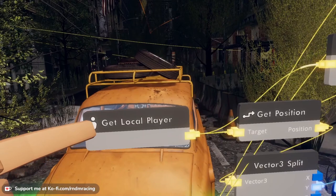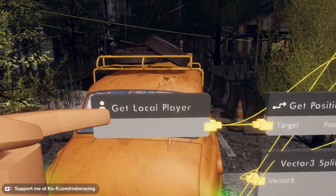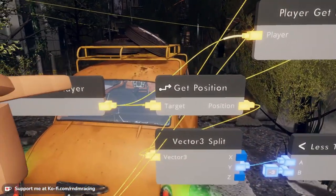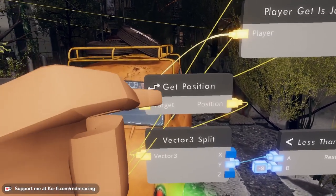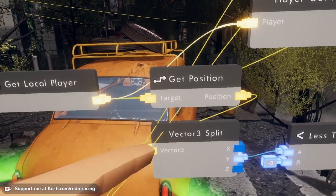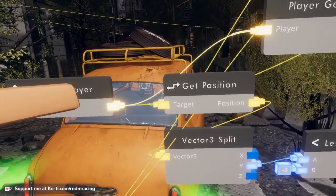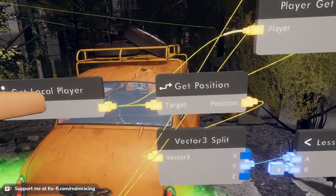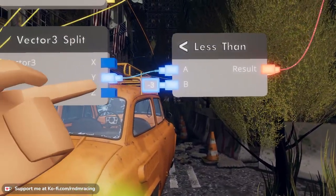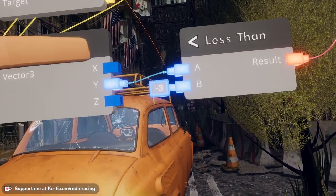And then we're gonna want this get local player. You are the local player for yourself. Everybody's the local player for themselves. So for the local player, we also want to get their position. We're gonna grab that, turn it into a vector split. That's gonna give us an XYZ coordinate, so that's where in the world you are in terms of actual positioning.